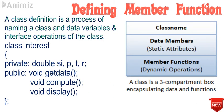Now we will try to understand what is class definition. A class definition is a process of naming a class, data variable, and interface operations of the class. As mentioned earlier, a class consists of a class name, data member, and member functions. Consider an example: class interest, where interest is the name of the class.